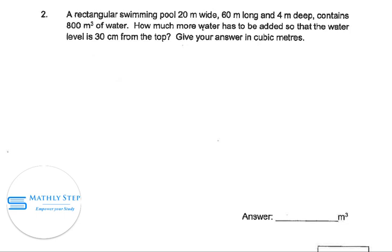Question 2. A rectangular swimming pool 20 meter wide, 60 meter long and 4 meter deep contains 800 meter cube of water. How much more water has to be added so that the water level is 30 cm from the top? Give your answer in cubic meter.